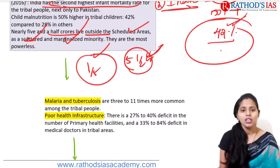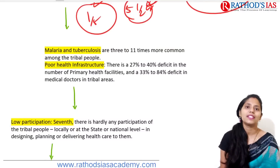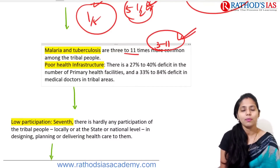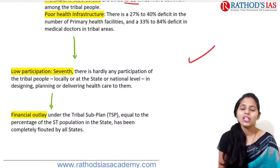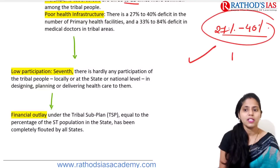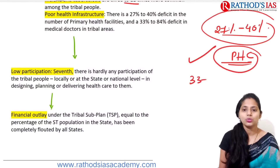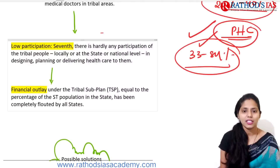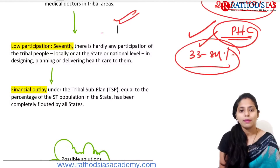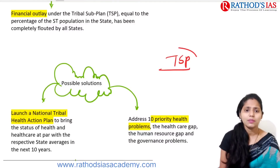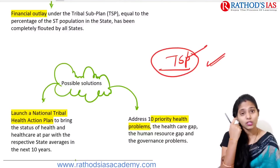There is also prevalence of diseases like malaria and tuberculosis, which are 3 to 11 times more prevalent among tribals compared to the general population. There is poor healthcare infrastructure with 27–40% deficit in primary healthcare centers. There is a 33–84% deficit of medical doctors in tribal areas. There is low participation of tribal people in designing, planning, and delivering healthcare at local, state, and national levels. The Tribal Sub-Plan (TSP) also suffers from under-implementation.